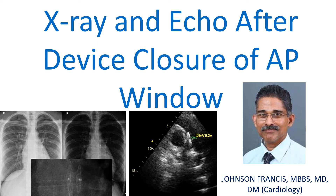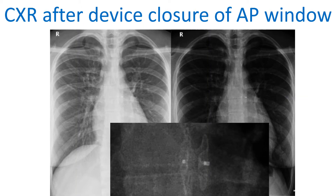Rare X-ray and echo images after device closure of an aortopulmonary window. Device closing an aortopulmonary window is seen on chest X-ray PA view in different styles. The first upper panel shows a standard PA view with the device faintly seen to the left of the spine, medial to the left cardiac border.